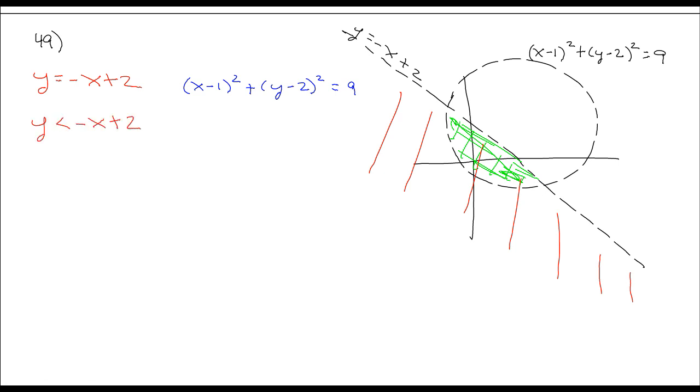And because the line is dashed, I do not want an equal sign below the less than symbol. So now for the circle equation, which I've written in blue,